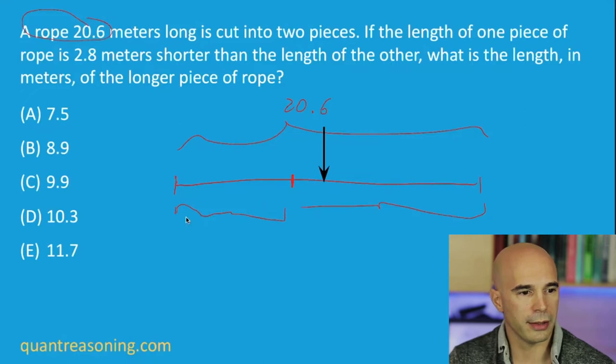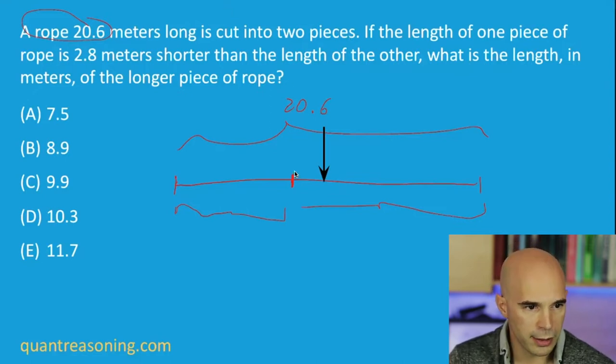But we know that this distance here on the left is 2.8 shorter than this longer distance. Who can help me now infer what this distance here in orange must be? In other words, how far apart are the point at which we cut the rope and the midpoint of the entire length of the rope? What do you all think? If the short one is exactly 2.8 shorter than the long one, then what's this orange distance?